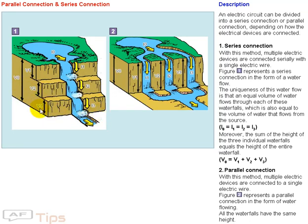Moreover, the sum of the heights of the three individual waterfalls equals the height of the entire waterfall: V0 equals V1 plus V2 plus V3.